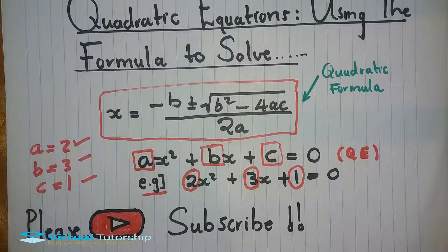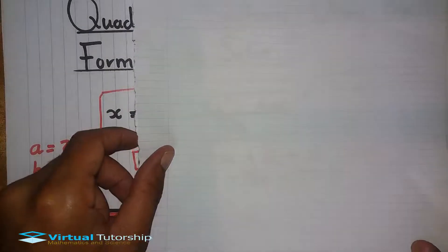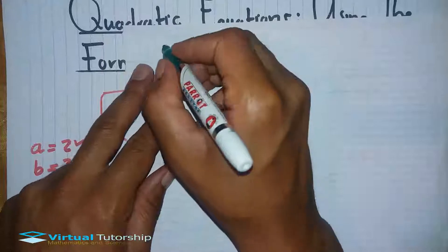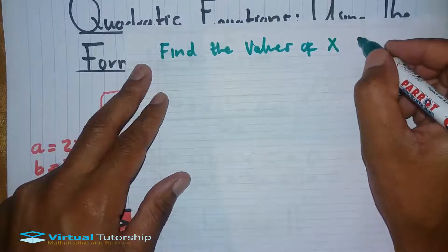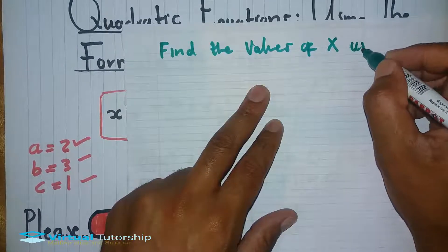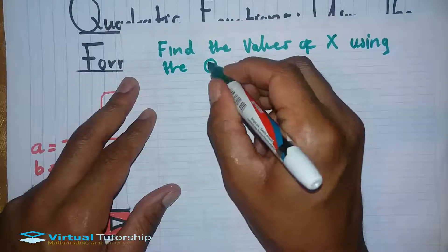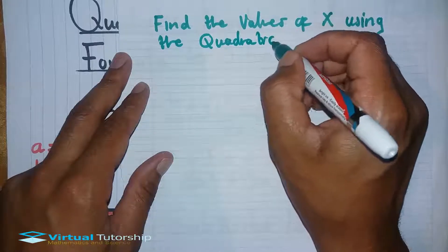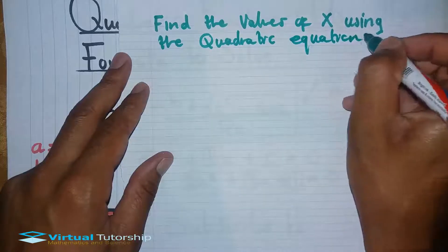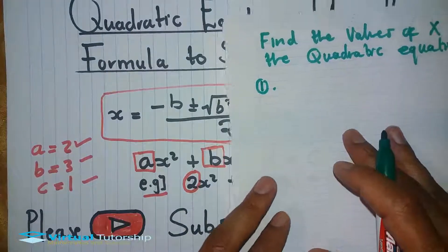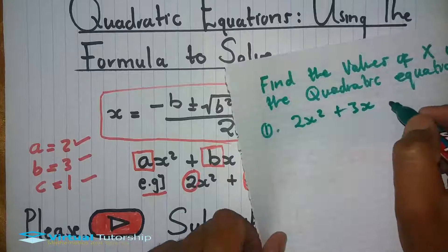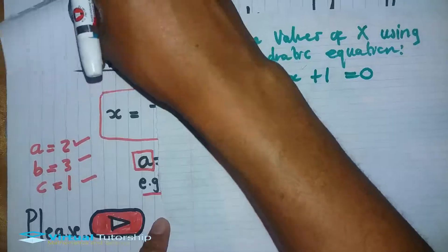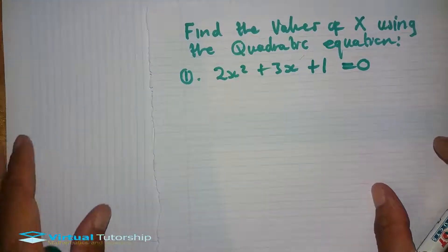Let's take some examples. Find the values of x using the quadratic formula. For the first equation, let's take this example: 2x squared plus 3x plus 1 equals 0. Find the value of x.